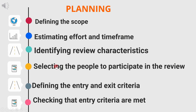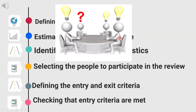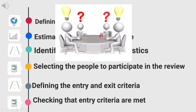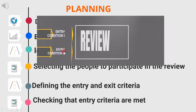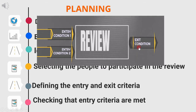Next, in review planning, we select the people to participate in the review. We analyze the complexity of the work product and identify the technical person to review it. Fifth is defining the entry and exit criteria. Entry criteria means the necessary documents required to start a review; exit criteria means making a report as defined in the planning stage. Before starting, all documents must be available, and once done, all necessary data must be collected and documented. The last point is checking that entry criteria are met before starting the review.